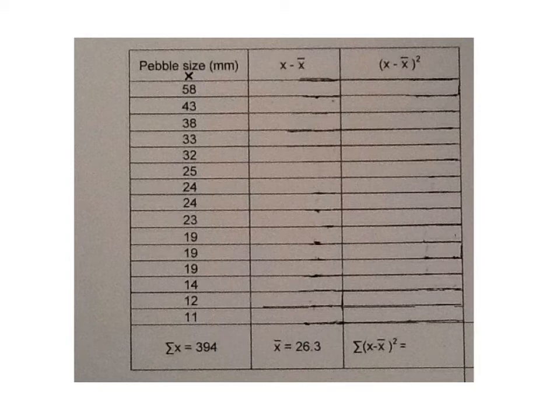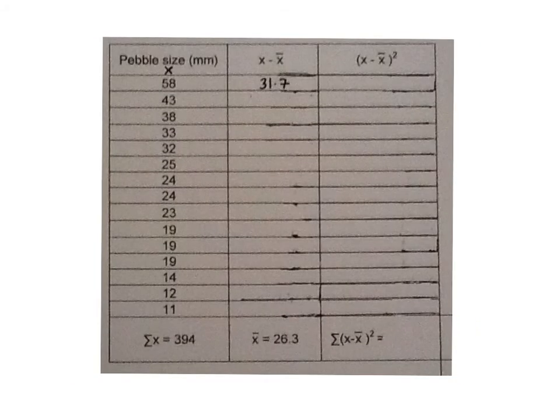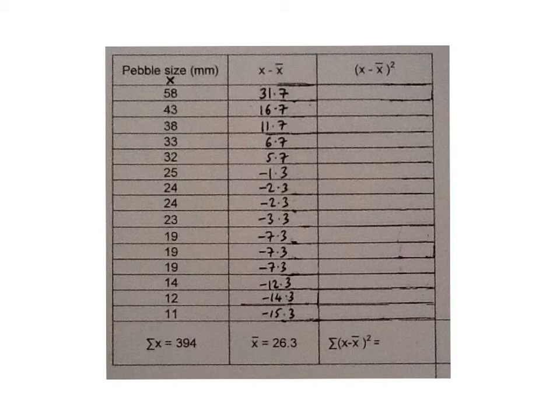The next column is x minus the mean which we need to calculate. So x which is 58 minus the mean which we have calculated at 26.3 comes to 31.7. And we will proceed to calculate it for each of the x values here. Here is the completed column for x minus the mean for all of the values from 58 down to 11. Don't worry if you have a minus figure. That's perfectly normal.